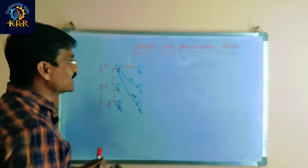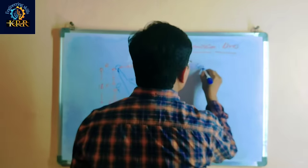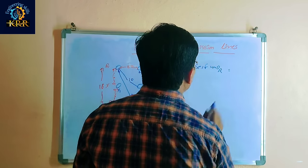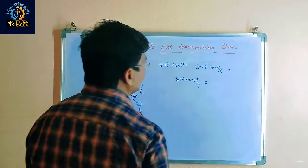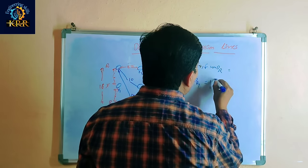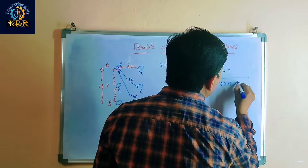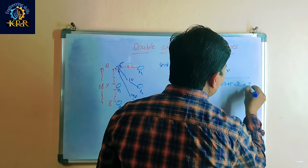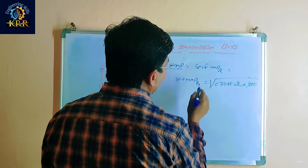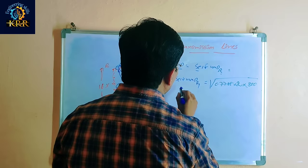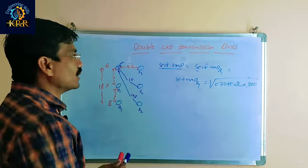In this example we calculate first the Self-GMD. Self-GMD at R equals the square root of 0.7788 multiplied by the radius of 2 cm, times the spacing S of 8 meters (800 cm). From this you will get the Self-GMD value.